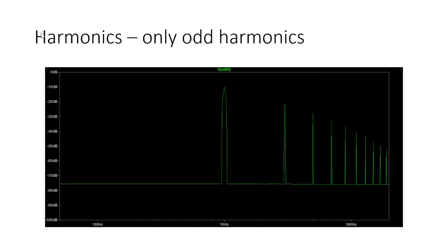Now take a look at the harmonic curve at the output. We can see the fundamental at 1 kHz. The 2 kHz second harmonic has no energy. 3 kHz is present, 4 is not, 5, 7, 9, 11, etc. are. So you get all the odd harmonics in the output — this type of circuit generates odd harmonics.